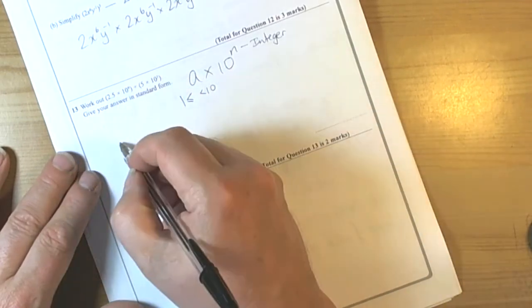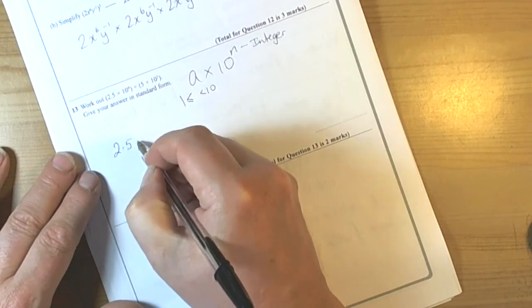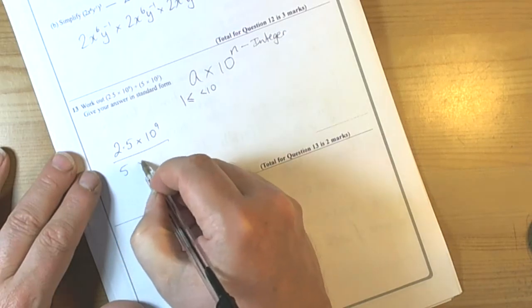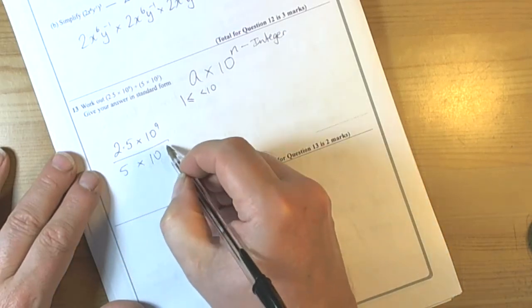We're doing a division, so personally I find it easier to do division by writing it as a fraction. So then I can start thinking about how the rules work for powers of 10.